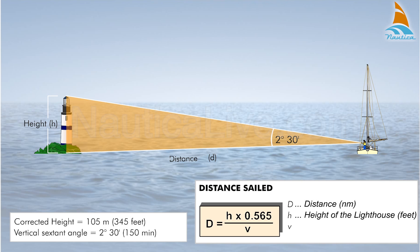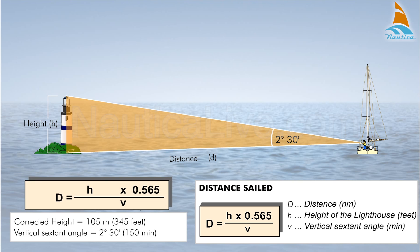V is the vertical sextant angle in minutes. In our case, 345 feet × 0.565 divided by 150 equals 1.3 nautical miles.